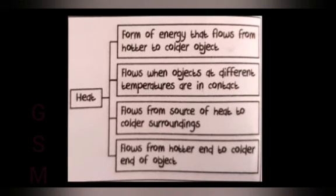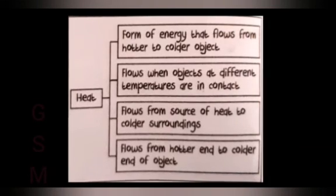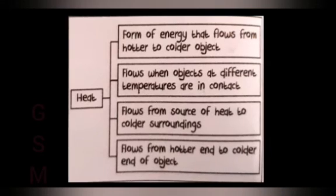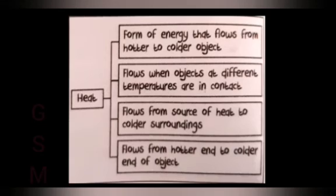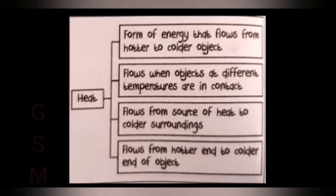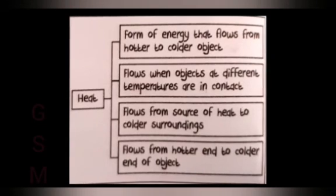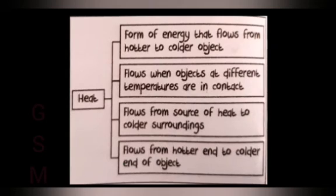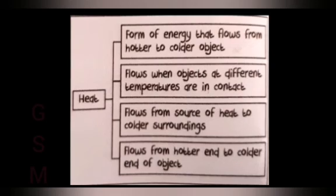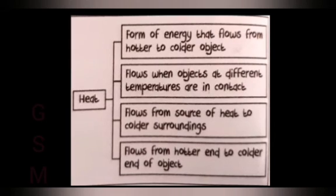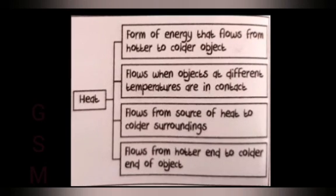So you have to conclude that heat is a form of energy that flows from hotter to colder objects, flows when objects at different temperatures are in contact, flows from source of heat to colder surroundings, and flows from hotter end to colder end of object.